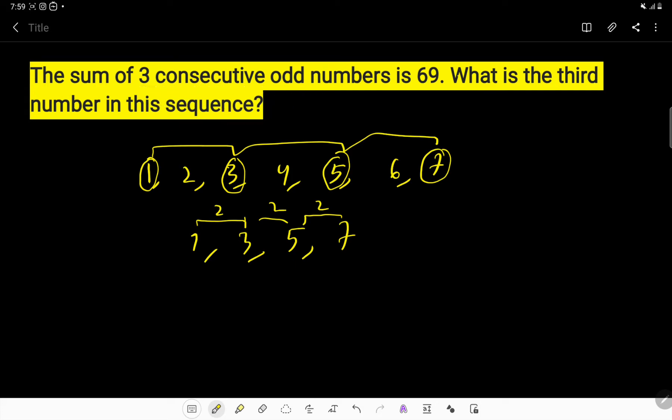So for solving this problem with three consecutive odd numbers, let's say the first number is x. The first number is x, so the second number will be x plus 2, because the difference between these two numbers is two. And the third number will be x plus 4.